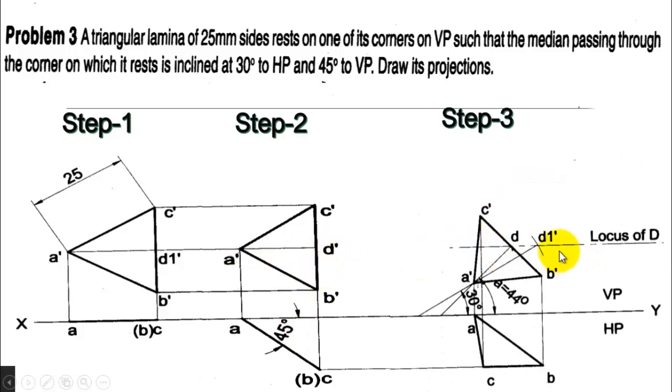Third step, as we know, we need to find alpha angle. We found the alpha angle, and on that alpha angle we placed A dash and D1 dash and found the final view.